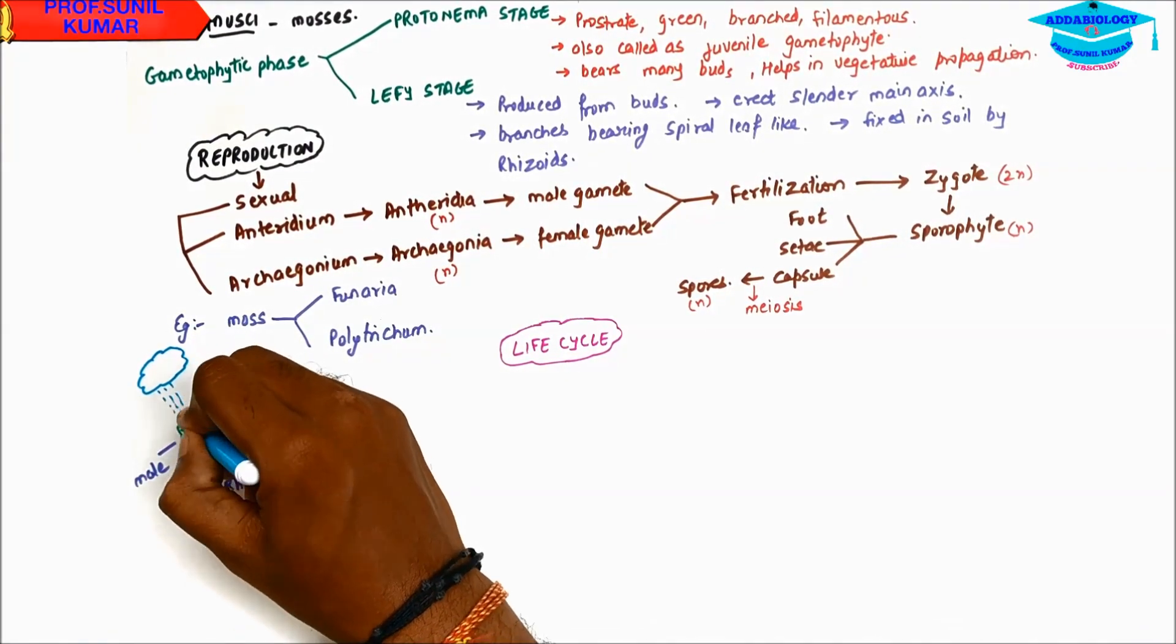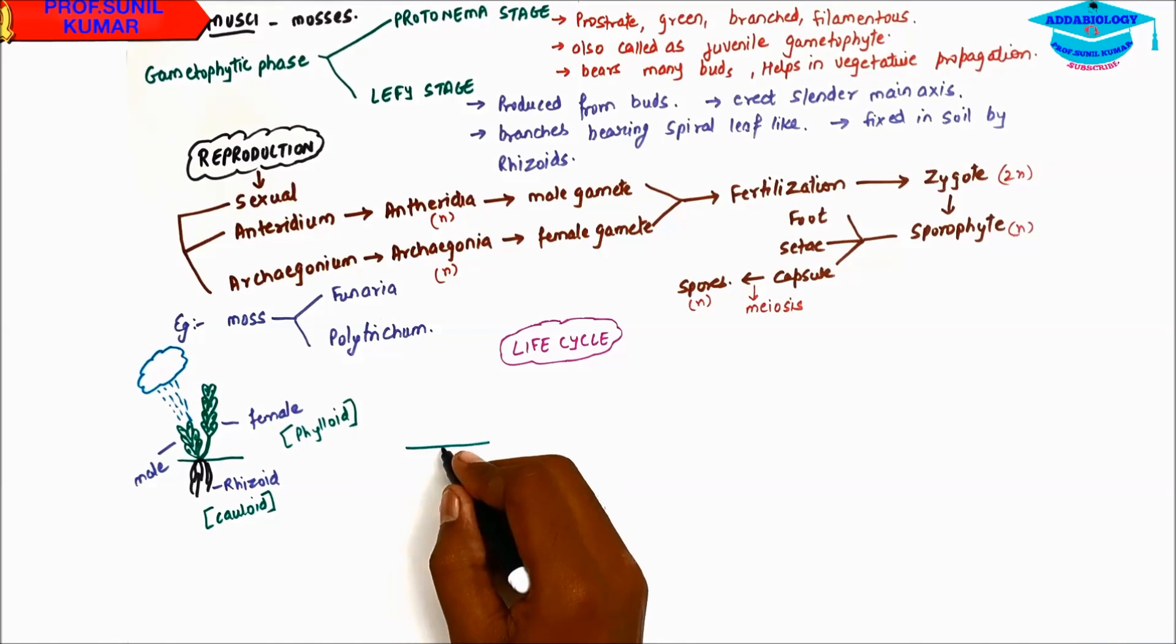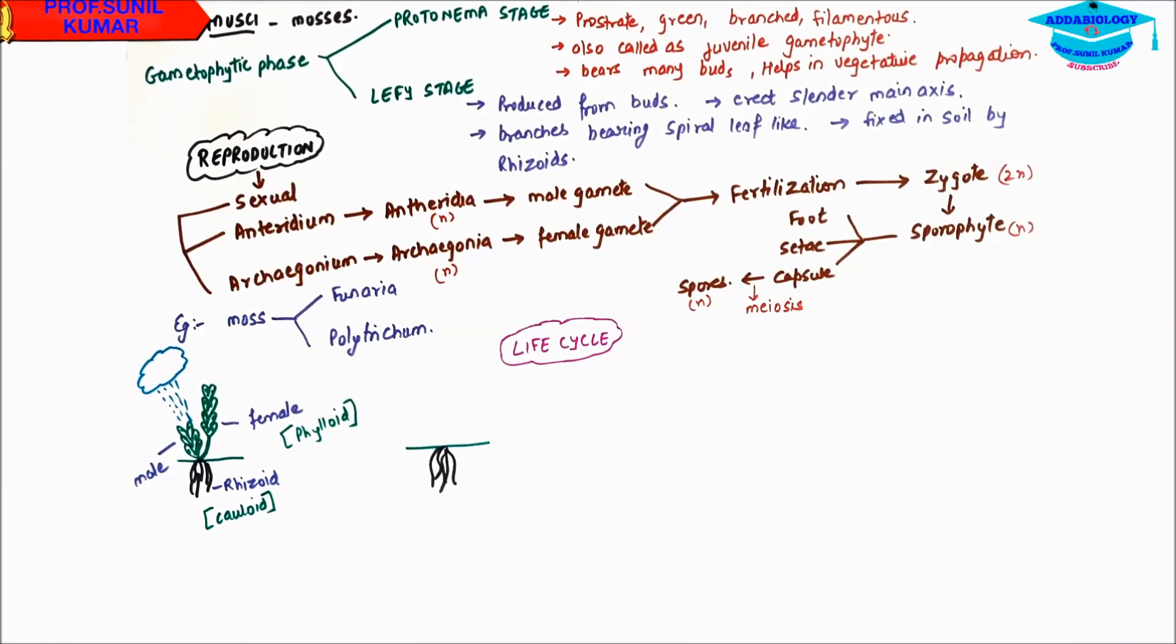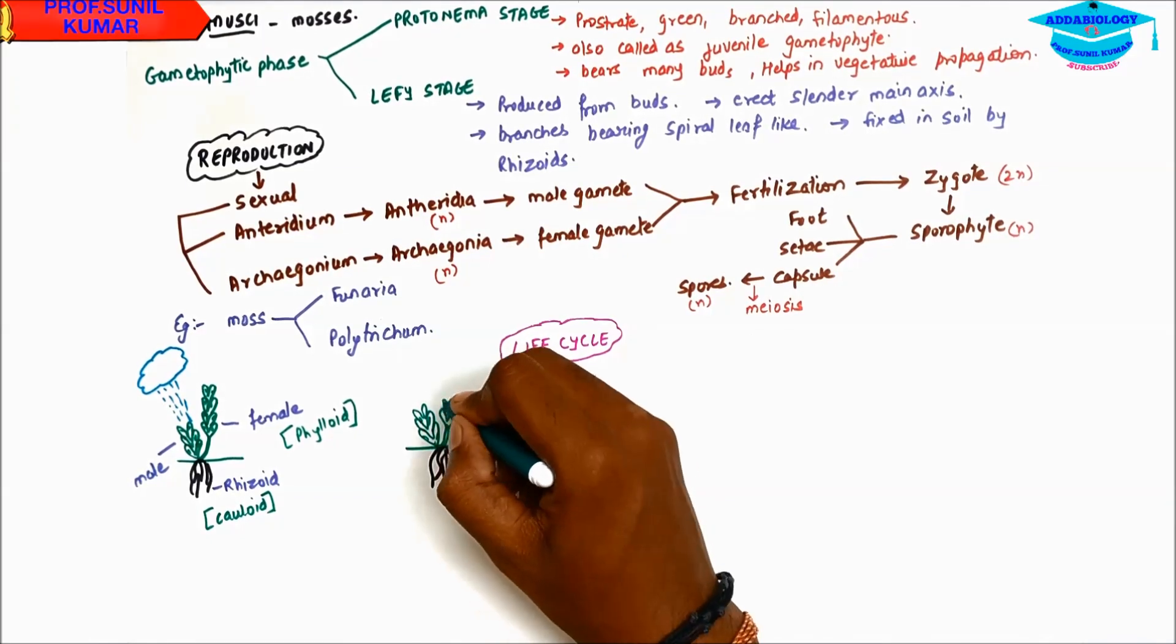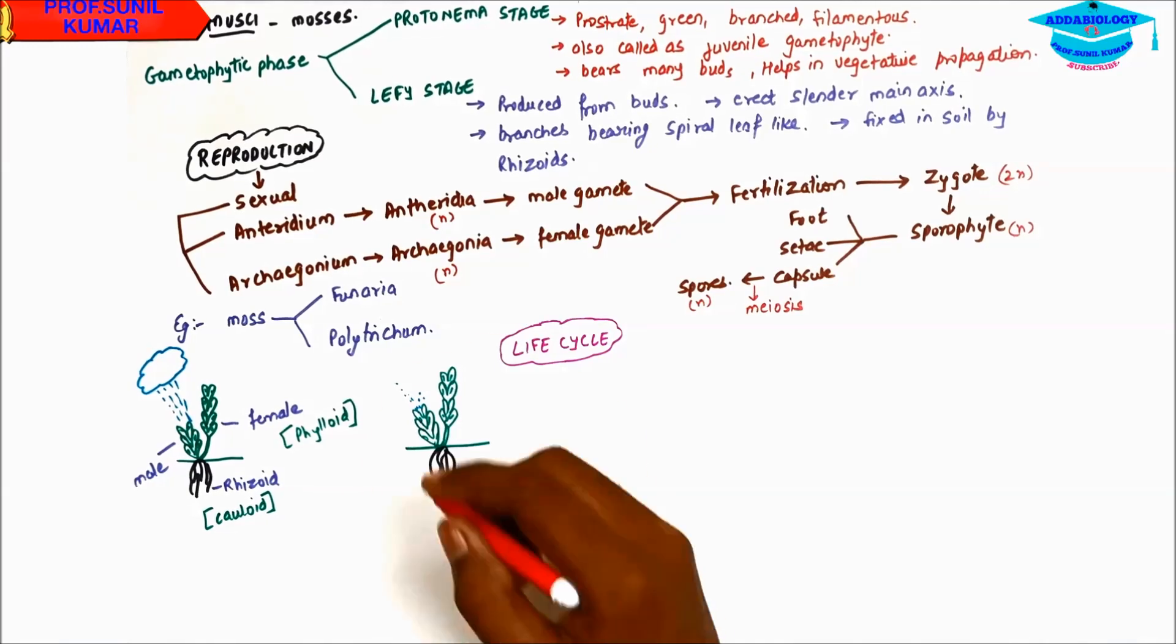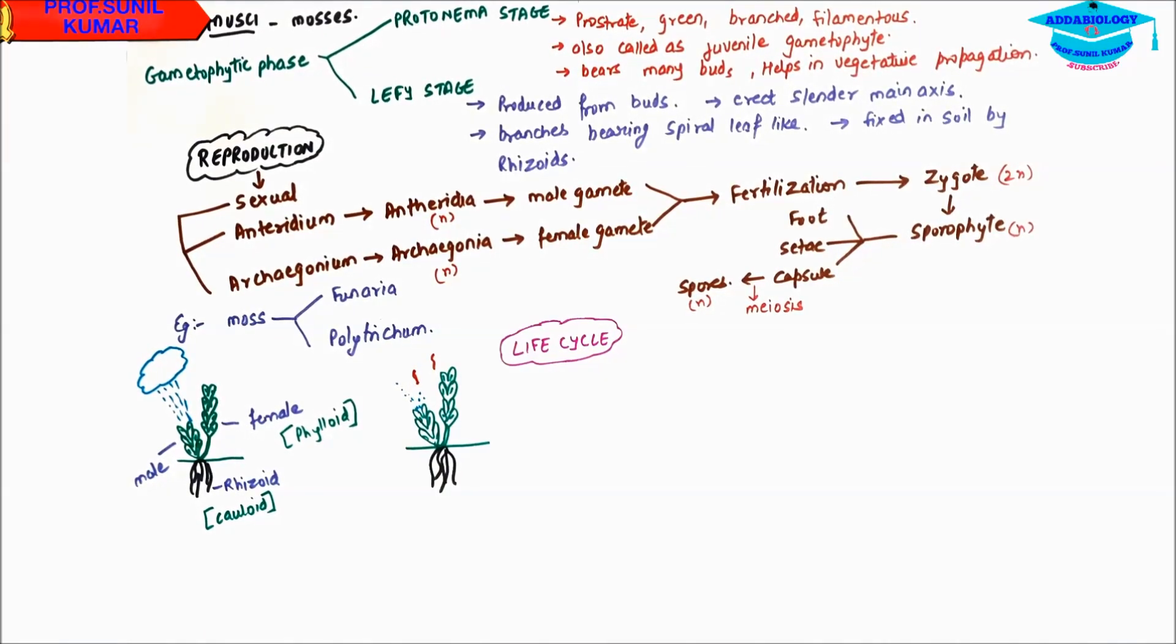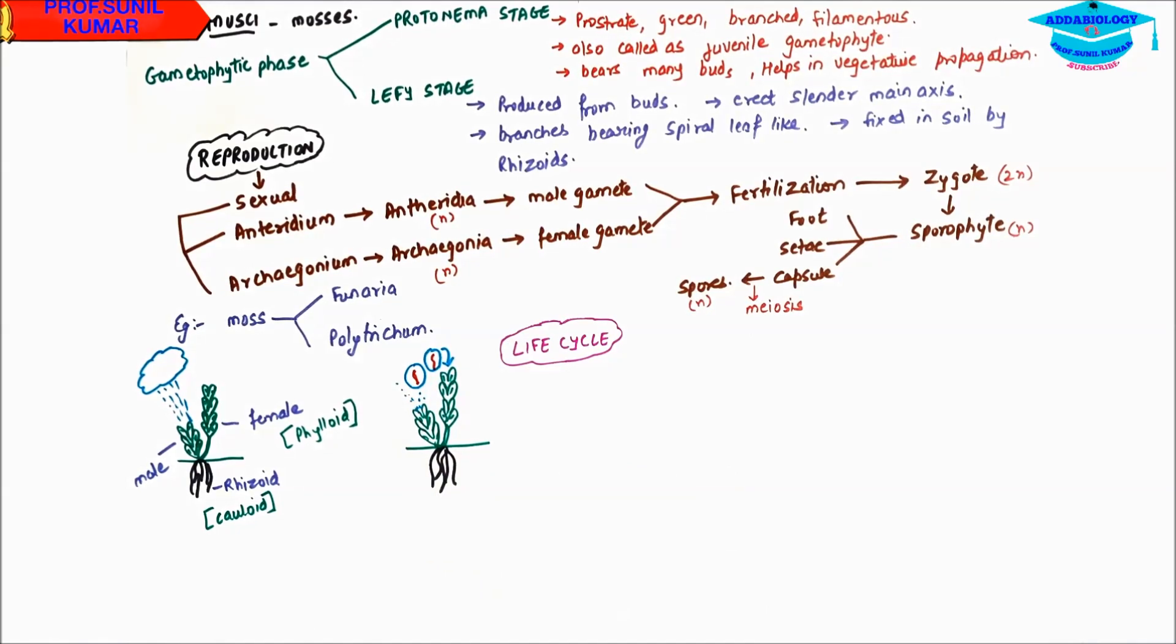The root stem is cauloid and the leafy part is phylloid. So whenever there is a rain, the rainwater falls on the plant. Some drops of water will splash out. As the rainwater falls on the male gametophyte or the female gametophyte part, some drops of water will splash out. And in this water droplet which is splashing out after hitting the surface will carry the antherozoid.